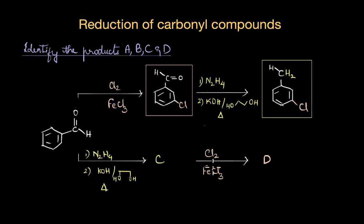What about the second case? Here we are performing the reduction first which means the structure of C would have C=O replaced with CH2. So C would be toluene and when toluene undergoes chlorination the CH3 group, because it is an electron donating group, activates the benzene ring towards electrophilic substitution reaction. It would direct the incoming electrophile which is Cl+ towards ortho and para positions.